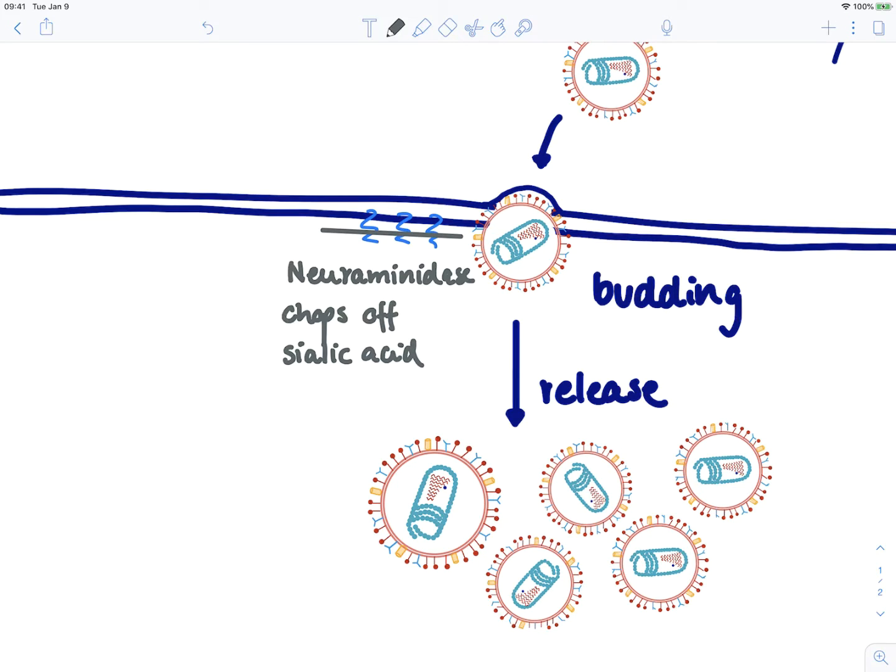Now we can talk about drugs to treat influenza virus. Actually there's only one really important drug and these belong to the class of the neuraminidase inhibitors. The idea is to use a drug that blocks this enzyme that chops off the sialic acid. Therefore the virus will just be stuck to the respiratory epithelial cell and will not be able to bud out.